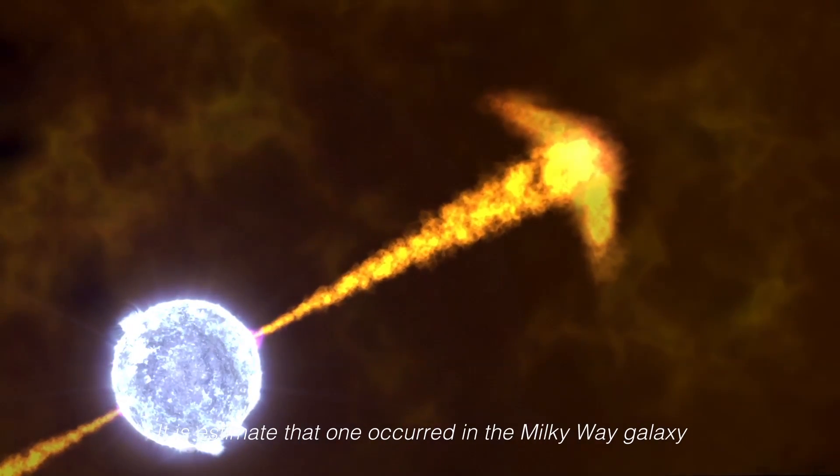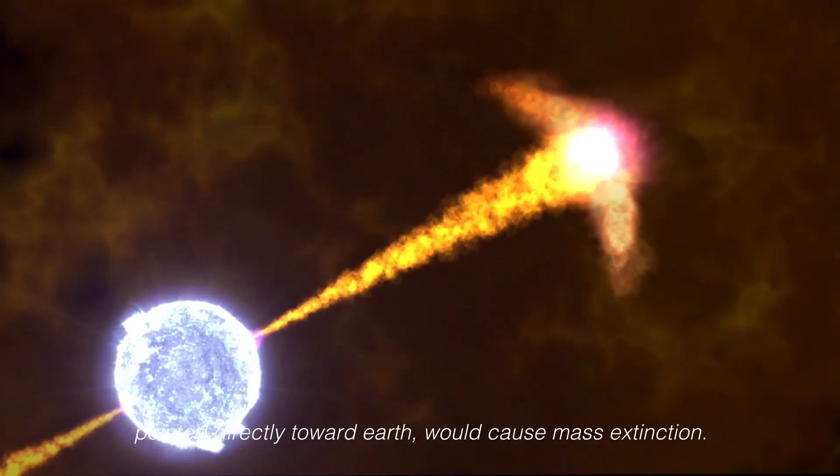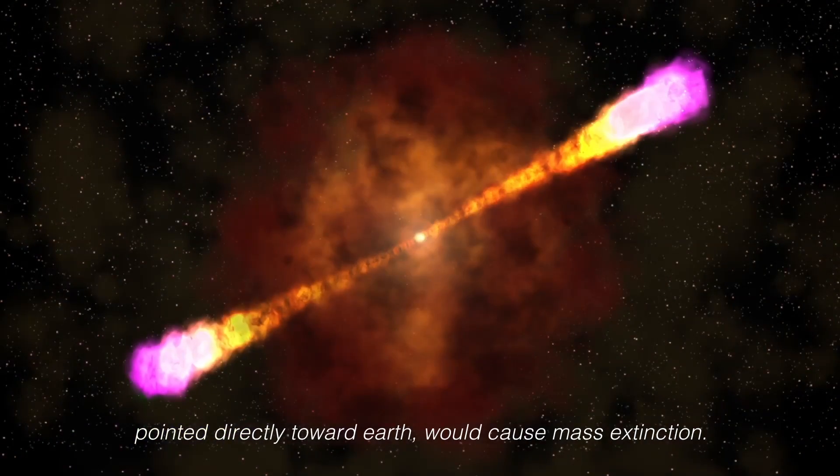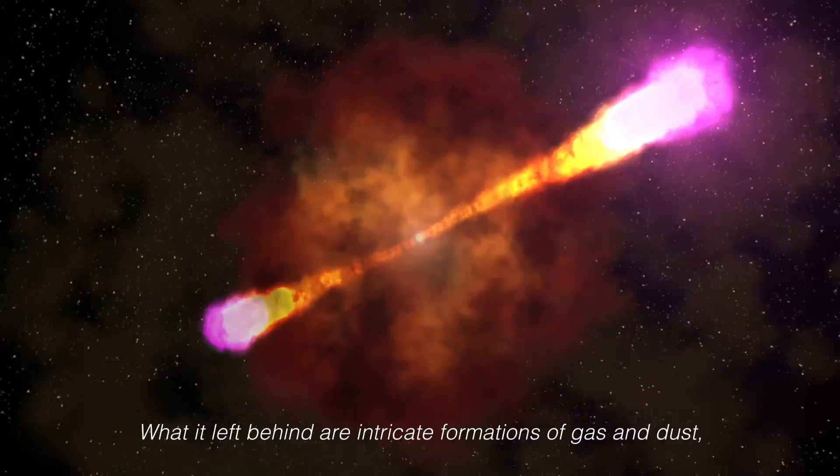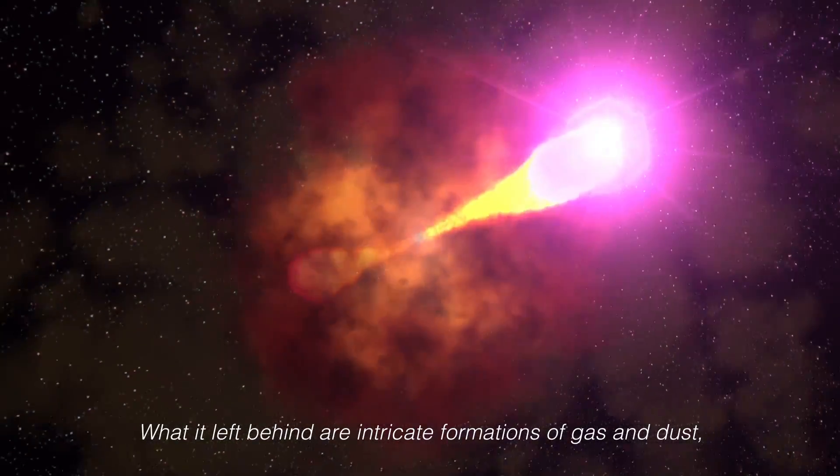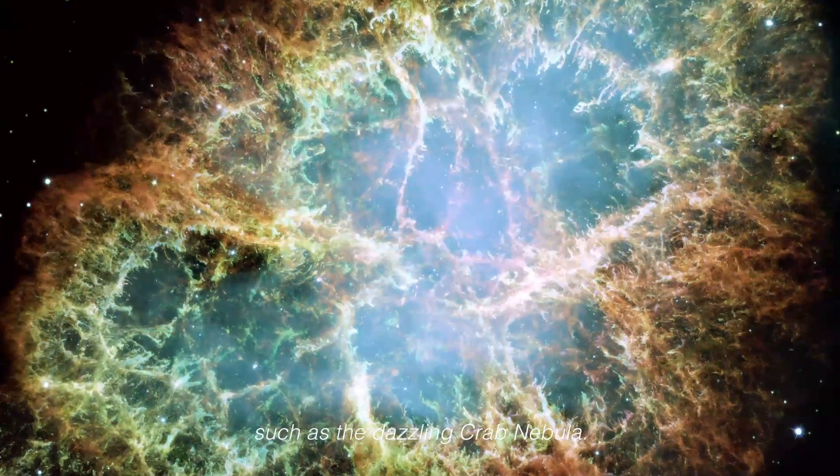It is estimated that one that occurred in the Milky Way galaxy pointed directly toward Earth would cause mass extinction. What it left behind are intricate formations of gas and dust, such as the dazzling Crab Nebula.